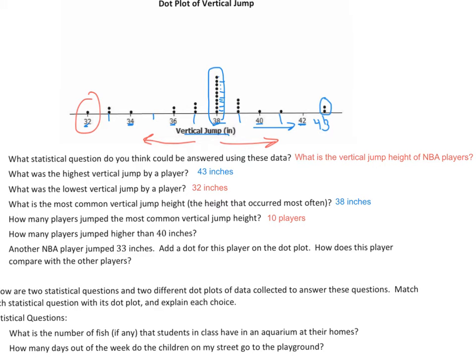The next question down says, how many players jumped higher than 40 inches? So I can't count this one because it's not higher. It's exactly 40. So I've got to look at everything to the left of 40. And I see I have one and then two of them right here. So I have one, two, three players jumped higher than 40 inches.